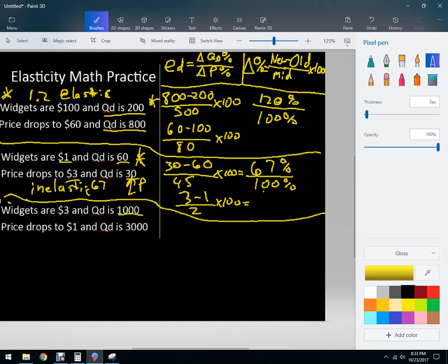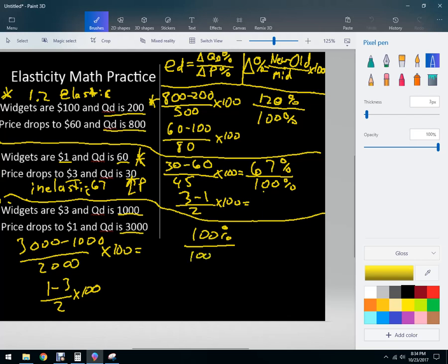Last one. Quantity demanded goes from 1,000 to 3,000, so 3,000 minus 1,000 over 2,000 times 100. And I'm going to get 2,000 over 2,000 which is 100%. And then price drops from 3 to 1, so it's 1 minus 3 over 2 times 100. Remember this is going to be negative but we're going to turn that into a percent. So we've got 2 over 2, so we've got 100% here, and this turns into 1. So the term for this is unitary elastic.